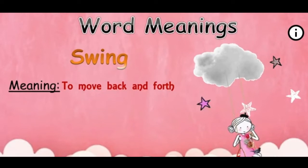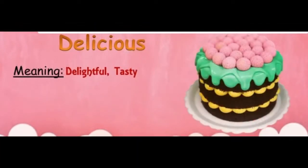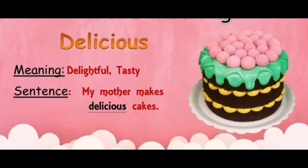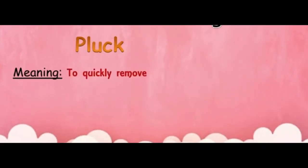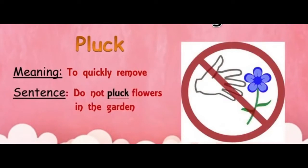Now we'll go to the new words. First one: swing. What is the meaning of swing? To move back and forth. Say a sentence for swing: 'Children love to swing in the playground.' And next: delicious. Delicious means very tasty or delightful. 'My mother makes delicious cakes.' And next: pluck. What is the meaning of pluck? To quickly remove. When you see a flower, if it is very nice, what will we do immediately? We'll pluck the flower. Do not pluck flowers in the garden or in the park.